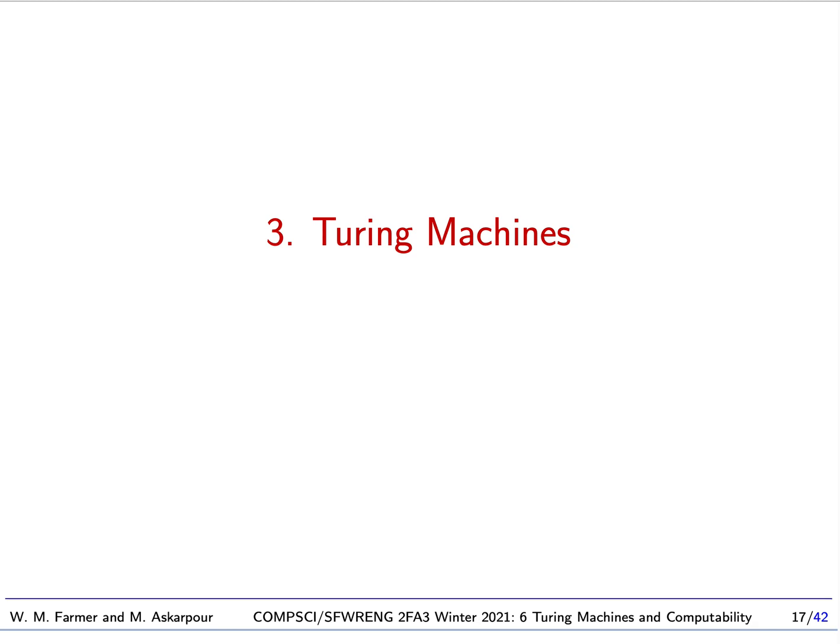Welcome back to McMaster University course, Computer Science and Software Engineering 2FA3, Discrete Mathematics with Applications 2. Today we're going to continue with the topic of Turing Machines and Computability. We're going to start by introducing the notion of a Turing machine, which is one of the most important ideas that has ever been presented in all of science.